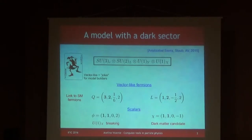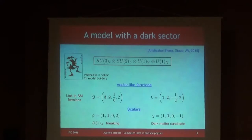We also have two additional scalars. This one, phi, which is going to be responsible for the breaking of the additional U1X. And there is an additional scalar chi with a charge minus 1, which is going to be our dark matter candidate. So it's a very simple model - just an extended gauge symmetry with additional fermions and additional scalars.